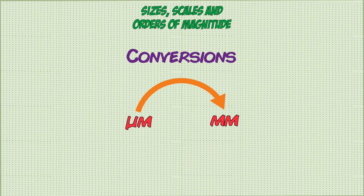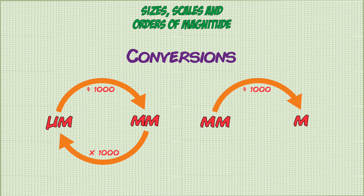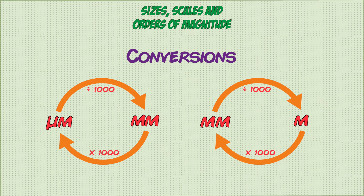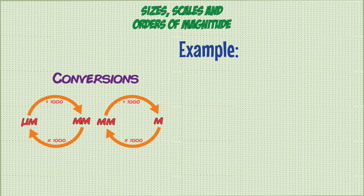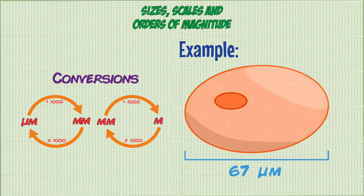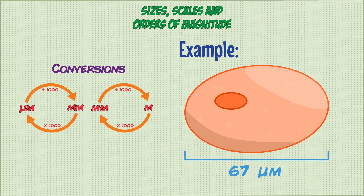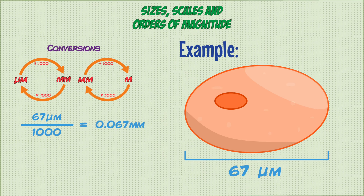To convert from micrometers to millimeters you divide by a thousand, and to go the other way you multiply by a thousand. This is the same for millimeters to meters: divide by a thousand to get to meters, and multiply by a thousand to go back to millimeters. For example, a eukaryotic cell with a size of 67 micrometers divided by a thousand gives 0.067 millimeters, and dividing by a thousand again gives 6.7 × 10⁻⁵ meters.